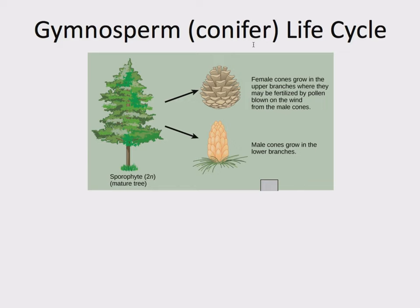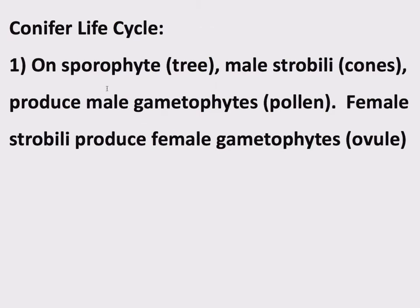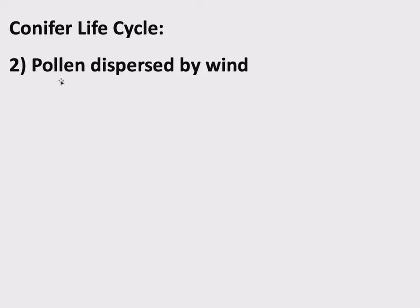These next few slides are really just putting everything together. Let's begin with the sporophyte — the prominent form, the mature tree. It has male strobili, remember strobili are cones, that produce the male gametophyte. The male gametophyte is pollen. On this tree you also have female strobili — those cone-like structures — that produce the female gametophyte, something called an ovule. So: sporophyte, male strobili produce male gametophytes, female strobili produce female gametophytes, both housed on the sporophyte.